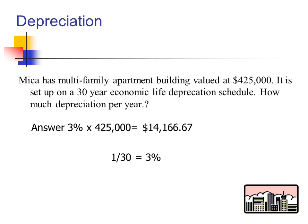Micah has a multi-family apartment building valued at $425,000 — this is the building now, not the whole property. It is set up on a 30-year economic life. How much depreciation per year? The answer: 3% times $425,000. Where did our 3% come from? 1 divided by 30 is 3%. So each year our $425,000 property depreciates $4,166.66 — our annual depreciation write-off.